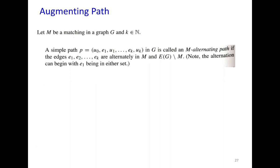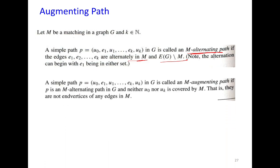Let M be any matching. A simple path is called an M-alternating path if the edges e1, e2, ..., ek alternate between being in M and not in M. An alternating path is called an augmenting path if neither of its endpoints u0 or uk is covered by M — that is, the endpoints are unmatched vertices.